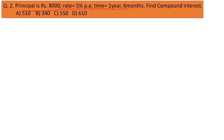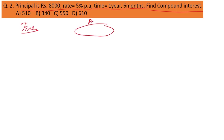The next question: principal is 8,000, rate is 5% per annum, time is 1 year 6 months. Find the compound interest. For this type of question I'm going to introduce a new method — the tree method.